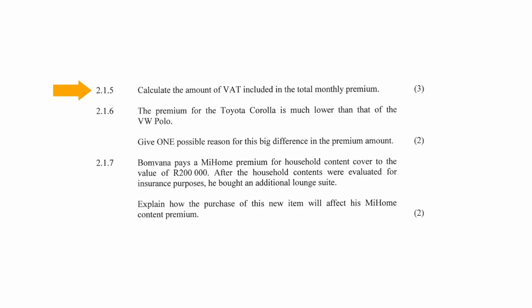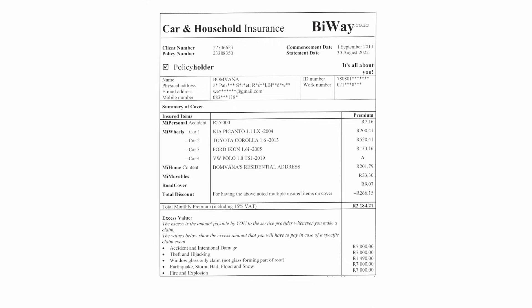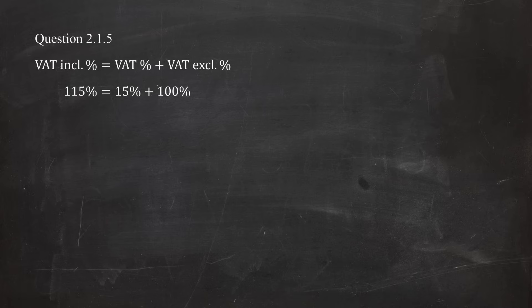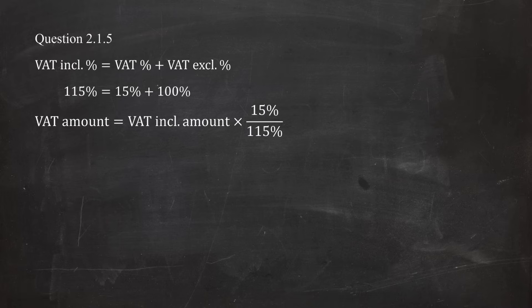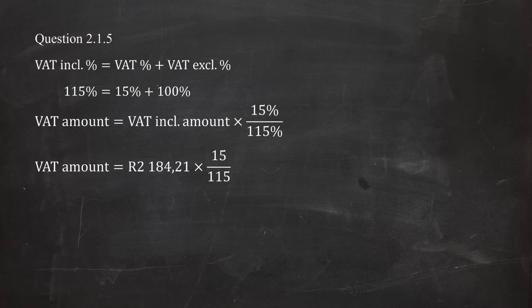In question 2.1.5, you are instructed to calculate the amount of VAT included in the total monthly premium. From Annexure A, the total monthly premium including 15% VAT is R2,184.21, which represents 115%. This is because the VAT inclusive percentage of 115% equals the VAT percentage of 15% plus the VAT exclusive percentage of 100%. To calculate the VAT amount from a VAT inclusive amount, use the formula: VAT amount equals the VAT inclusive amount multiplied by 15% divided by 115%. So the VAT amount equals R2,184.21 multiplied by 15 over 115, which equals R284.90.